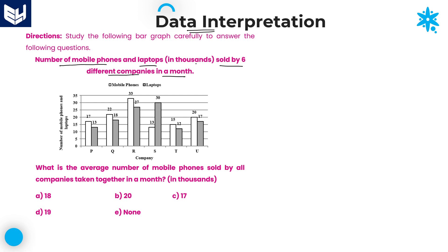The information is very easy to understand — it shows how many mobile phones and how many laptops are sold by six different companies in a month. In total we have six different companies: P, Q, R, S, T, and U. These are the six different companies. The number of mobile phones sold and also laptops sold — these values are given in terms of thousands.